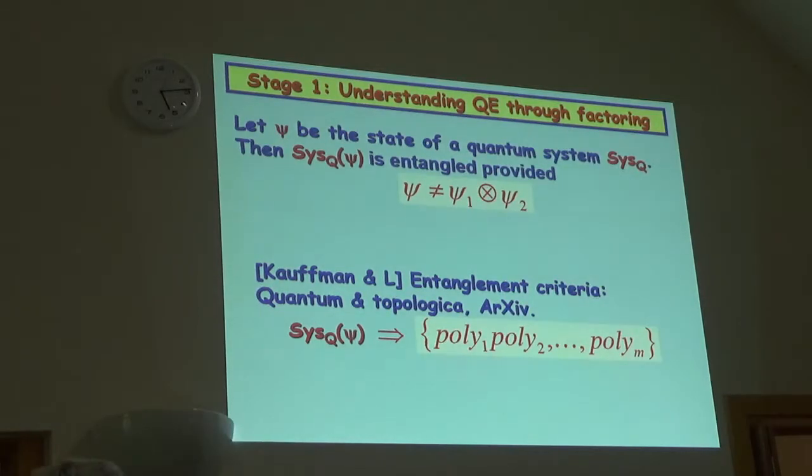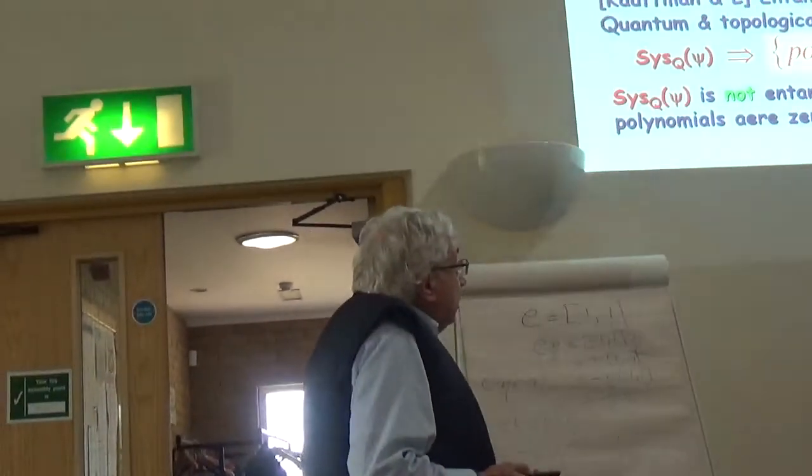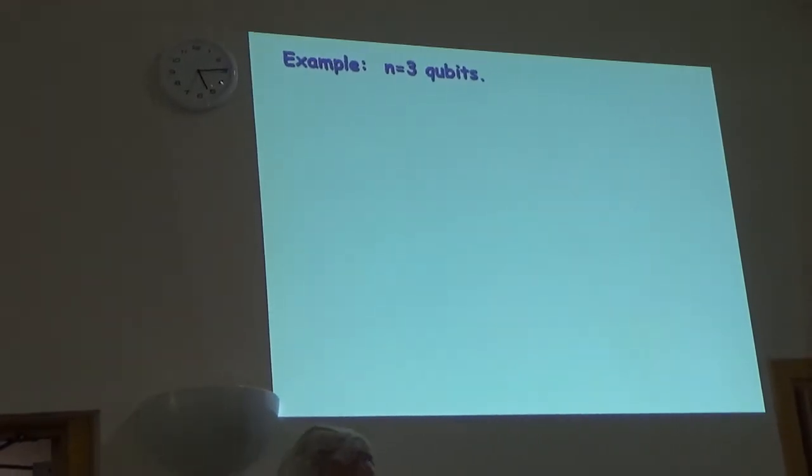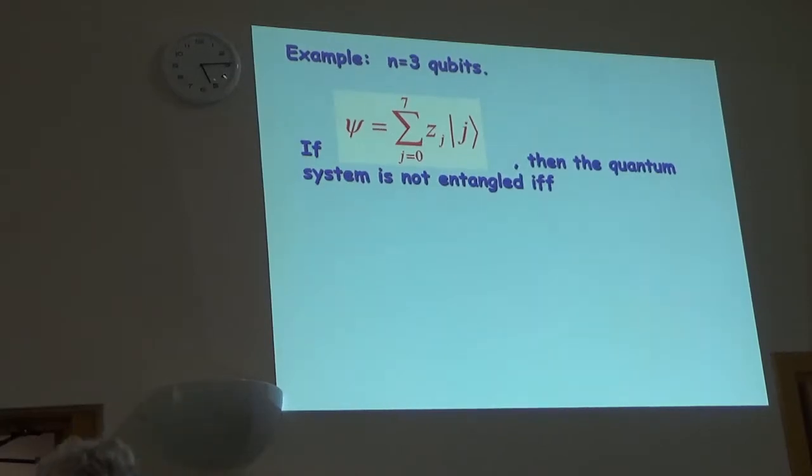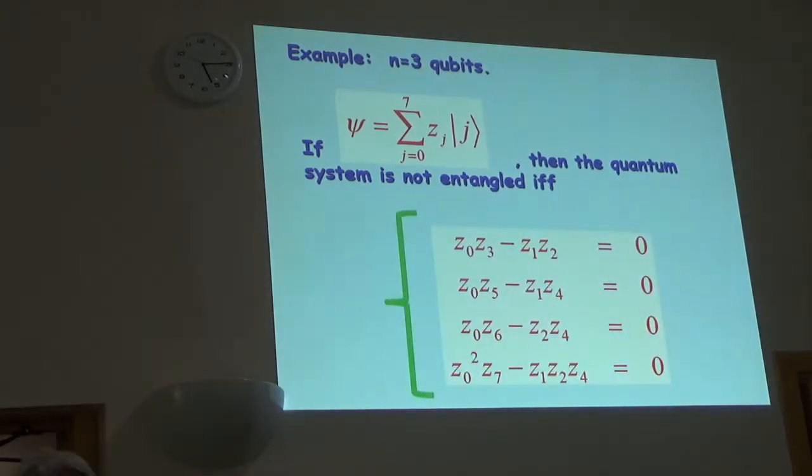In fact, there's a paper by Lou and I wrote, entitled Entanglement Criteria, Quantum and Topological. It's on archive, and what it does is the following. It associates with the qubit quantum system a family of polynomials. And in this paper, it's shown that this system is not entangled if all the above polynomials are zero. Here's an example of this theorem. We have n equals three qubits. Here is our state vector written as a sum of complex amplitudes at a standard basis. Then the quantum system is not entangled if and only if this very simple set of equations is not equal to zero. So, in a certain sense, this reduces the problem of studying entanglement to studying algebraic varieties.